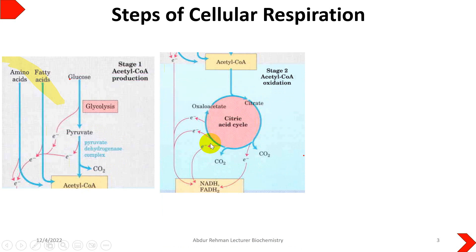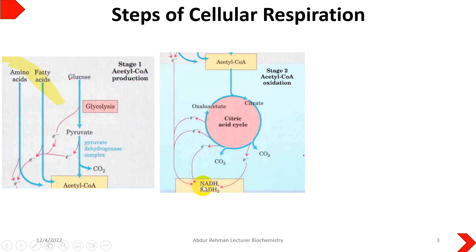The next stage of cellular respiration is the conversion of acetyl-CoA through an oxidation process. This happens when acetyl-CoA enters the membrane-bound organelle known as the mitochondria, where it goes into the citric acid cycle. There it is converted into carbon dioxide, and three NADH2 molecules and one FADH2 molecule are produced through the oxidation of acetyl-CoA.